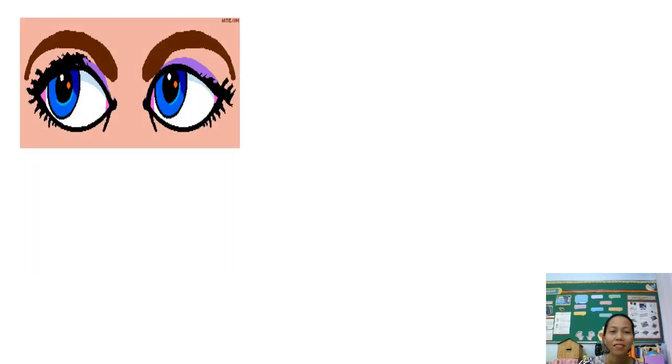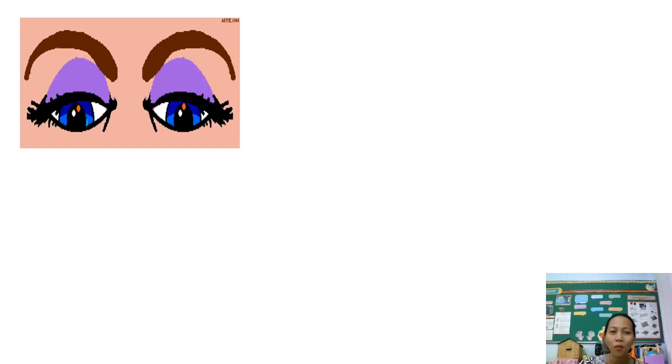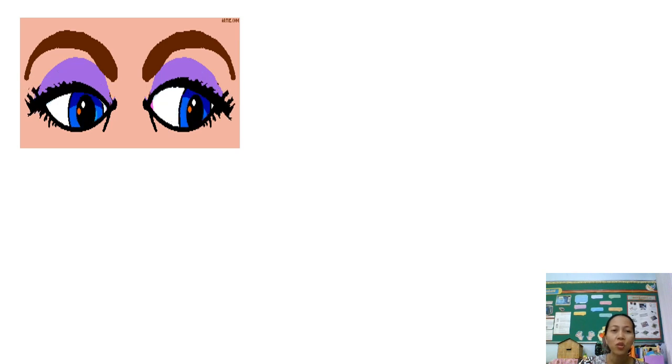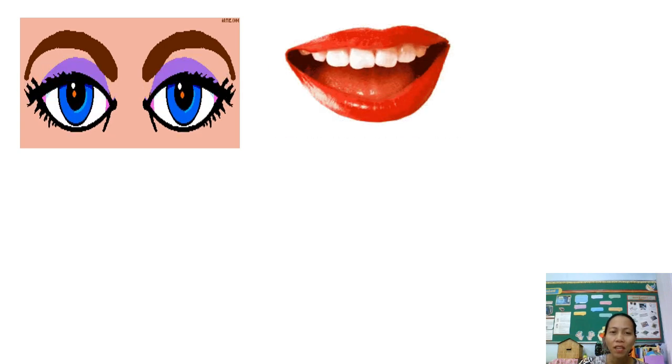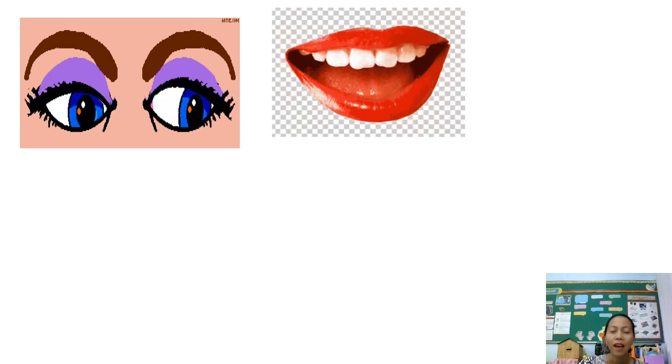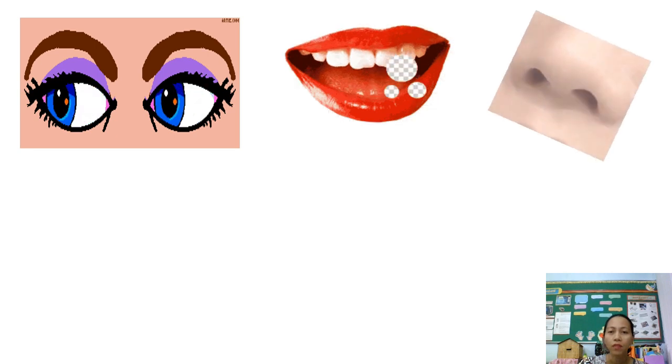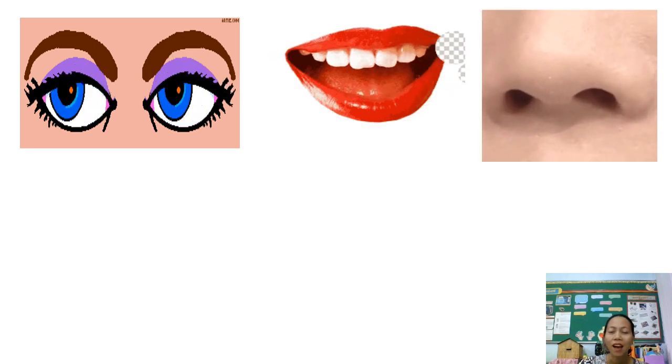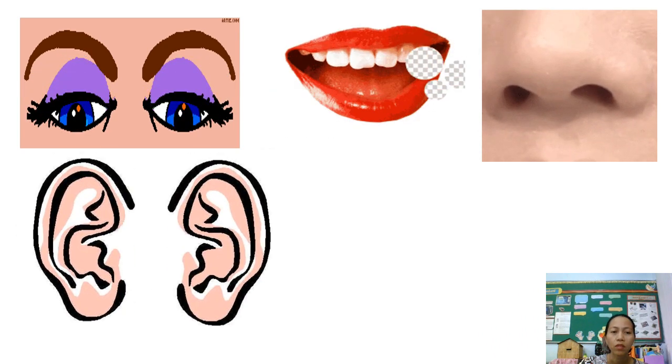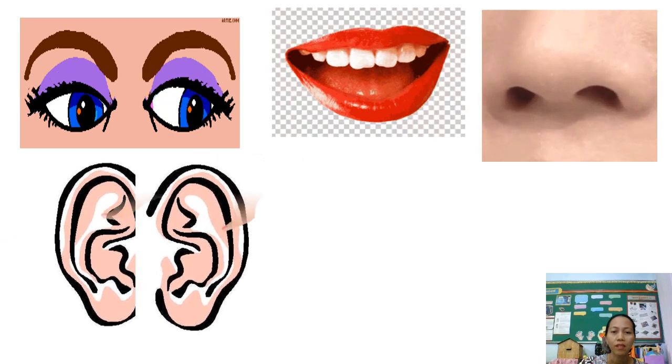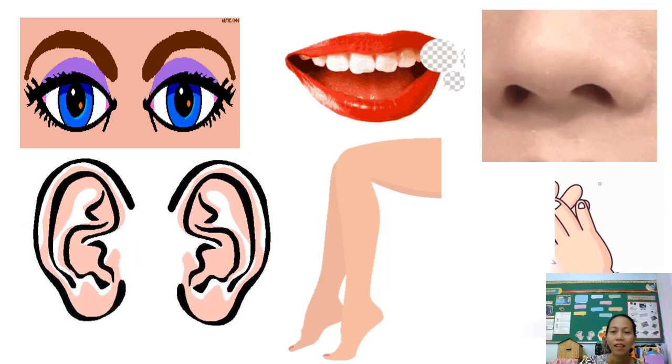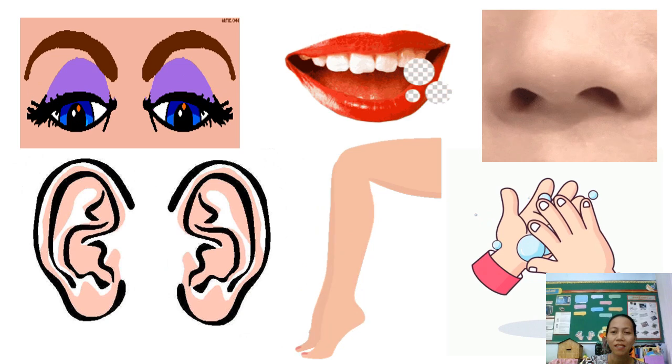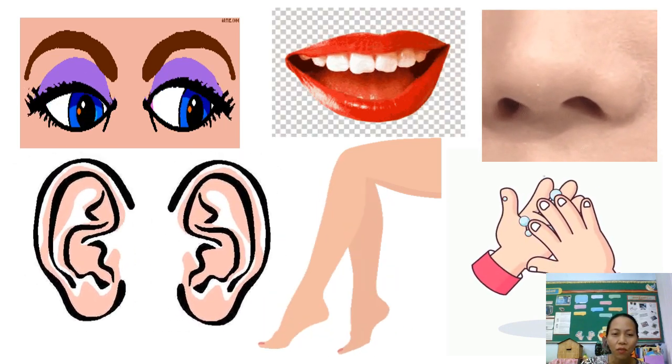How many eyes do you have? I have two eyes. I have two eyes. I have one mouth. I have one nose. I have two ears. I have two legs. And I have two hands. Thank you, students, for the questions.